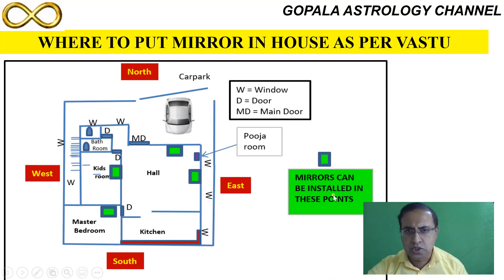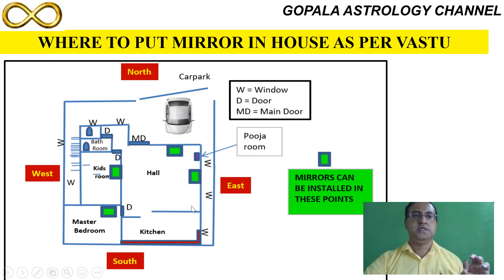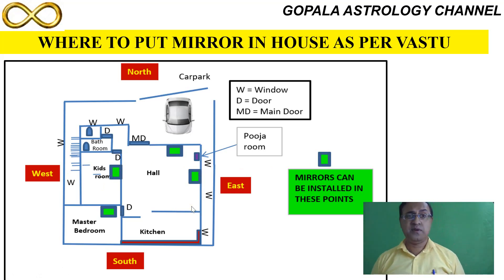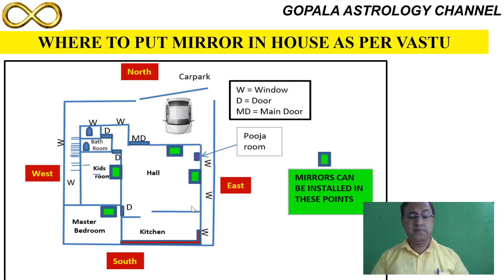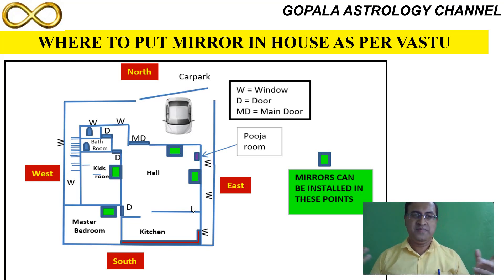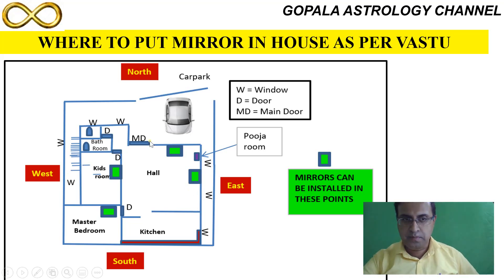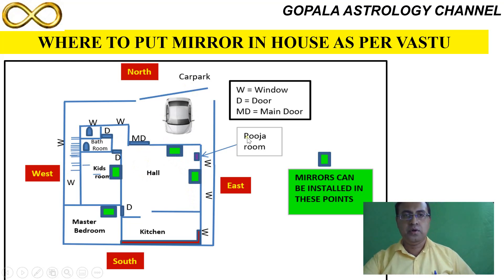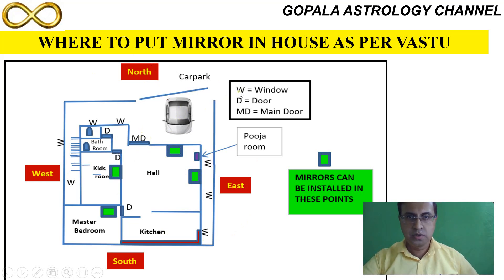So mirrors can be installed at these points — wherever you see the green rectangle. I'm showing this in a very simple two-bedroom house, but you can use the same concept for any number of bedrooms, a bungalow, or anything. This mirror application is useful whether you have a single bedroom or 50 bedrooms — Vastu still plays a very important role for these mirrors. Imagine a north-facing house: the car park is here, MD is the main door, W's are all the windows, and D is the door.